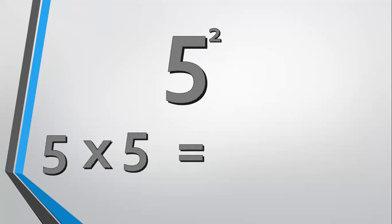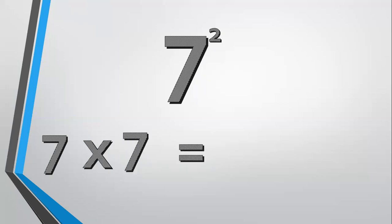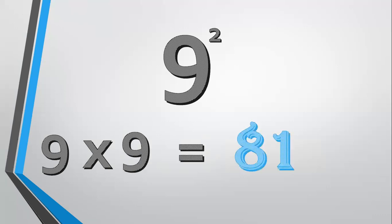5 square means 5 times 5, which equals 25. 7 square means 7 times 7, which equals 49. 9 square means 9 times 9, which equals 81.